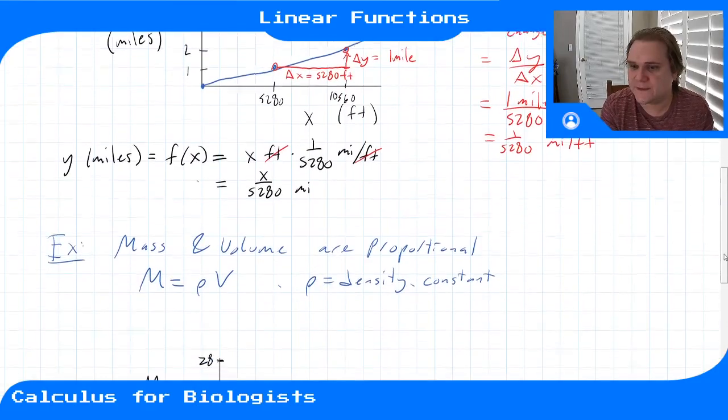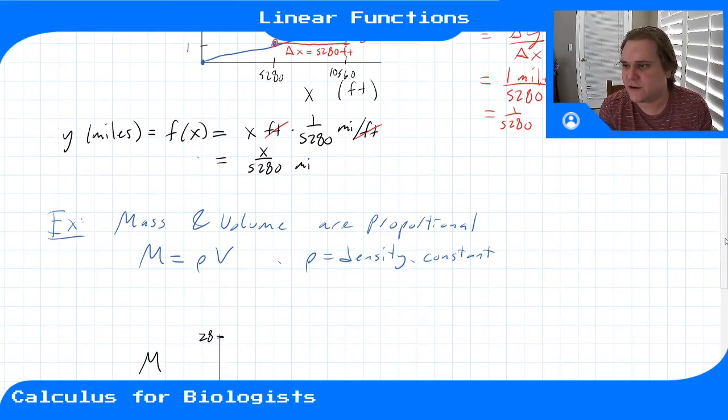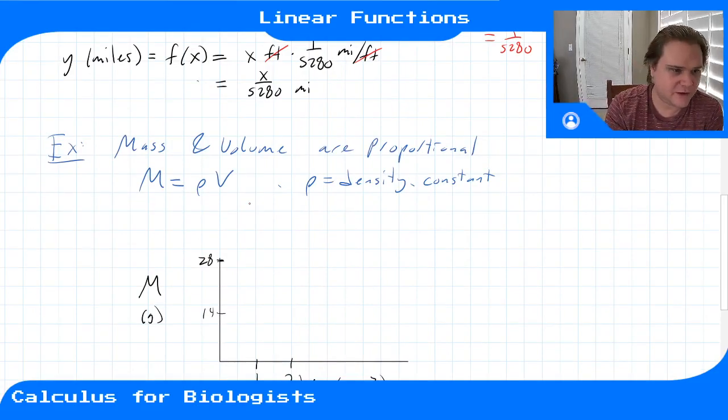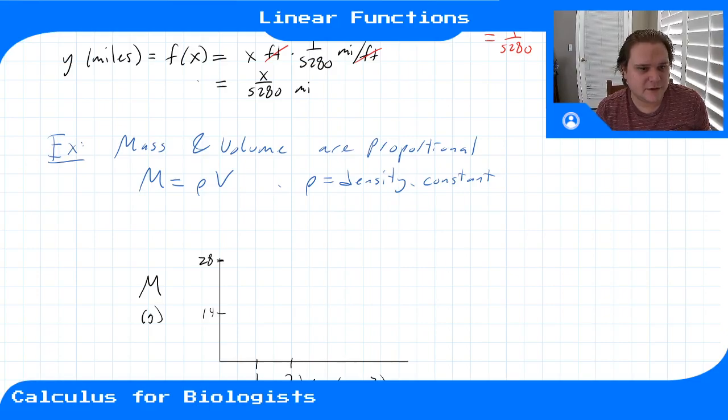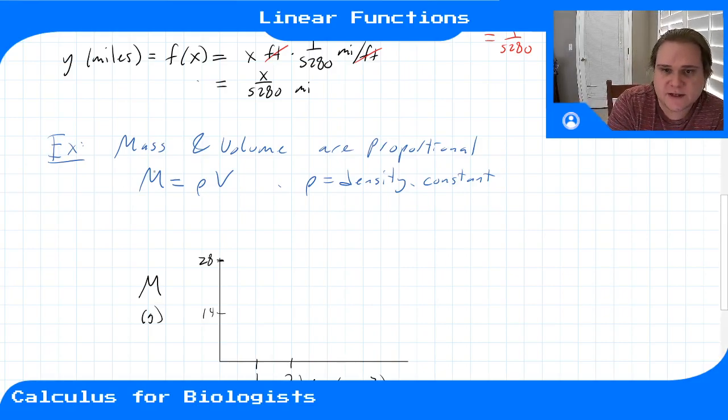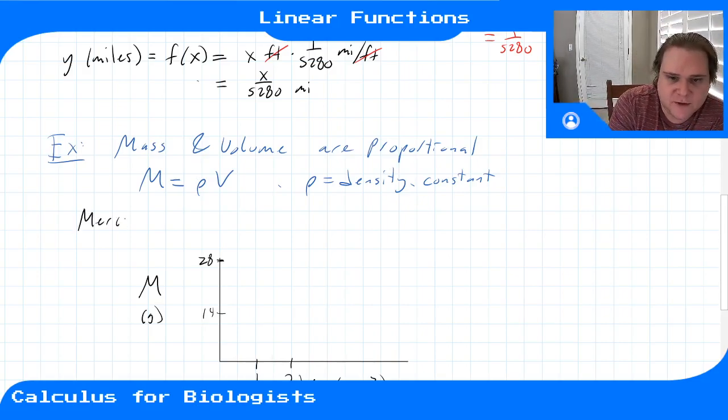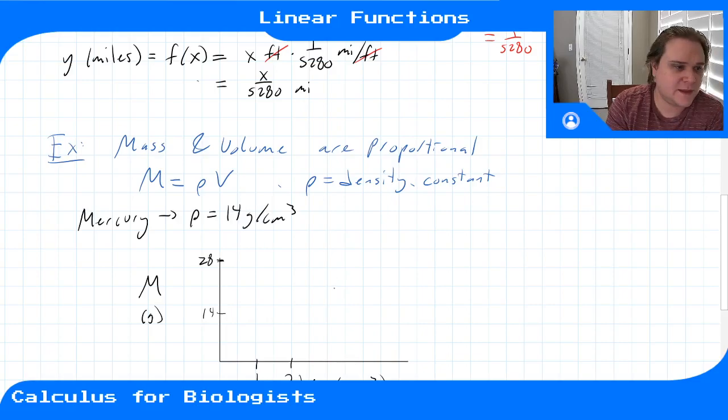Let's do another example where it's not coming straight from a unit conversion. Remember we did mass of a sphere of liquid in a previous video. Mass is proportional to volume, and the proportionality constant is the density. In the example we had last time, we had a drop of mercury, which has a density of around 14 grams per centimeters cubed.